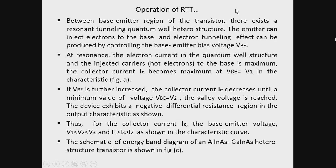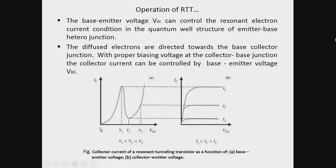Between the base-emitter region of the transistor, there exists a resonant tunneling quantum well structure. The emitter can inject electrons into the base, and the electron tunnel effect can be produced by controlling the base-emitter voltage VBE. At resonance, the electron current in the quantum well structure and the injected carriers — which are essentially electrons — into the base is maximum. The collector current takes its maximum value at VBE equal to V1 in the characteristic curve in figure A.